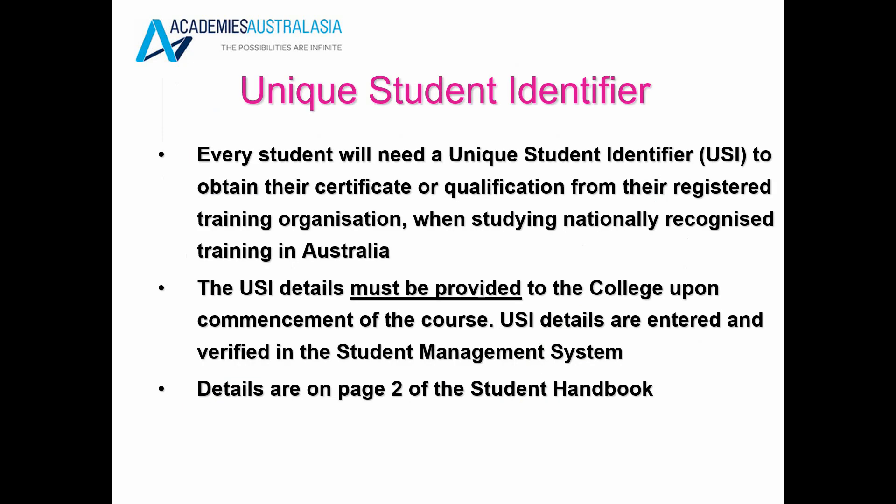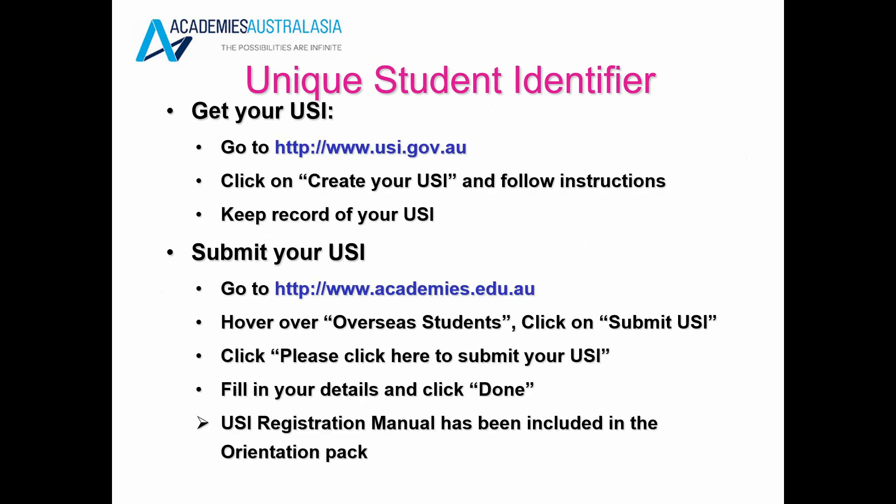The Unique Student Identifier: every student will need a Unique Student Identifier, also known as a USI, to obtain their certificate or qualification from their registered training organisation. The USI details must be provided once you have set this up. For more details you can refer to the student handbook. Basically, you can go to www.usi.gov.au, click on 'Create Your USI' and follow the instructions. Once you have created your USI, keep a record of it.